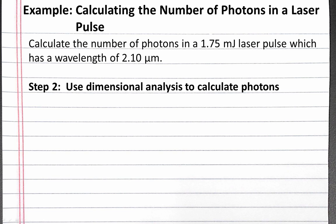Now we'll use this as a conversion factor in our dimensional analysis to calculate the number of photons. We start our dimensional analysis with 1.75 millijoules, and we can convert this into joules.